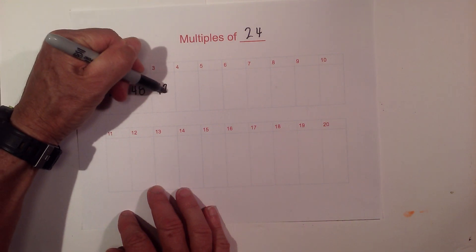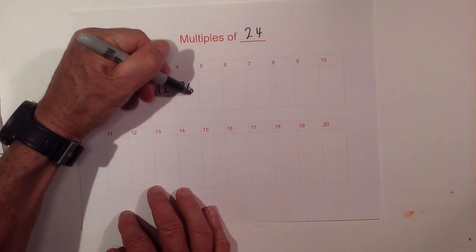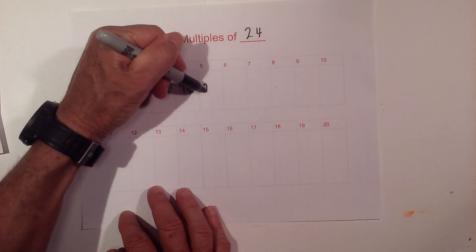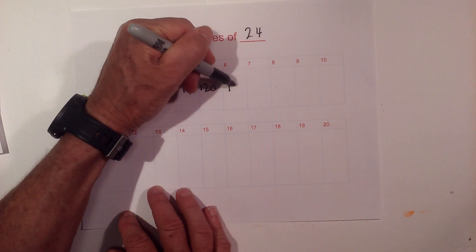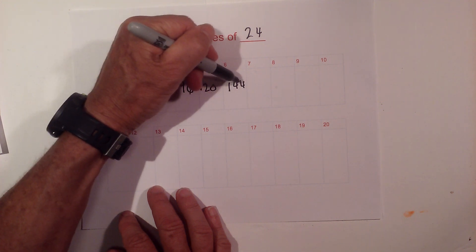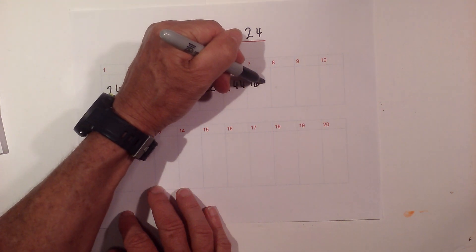Then we have 72, 96, 120. 24 times 6 is 144, and we have 168.